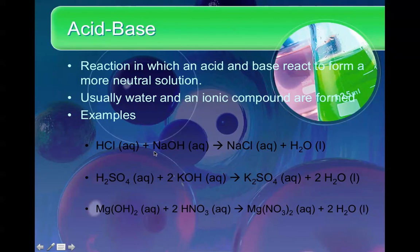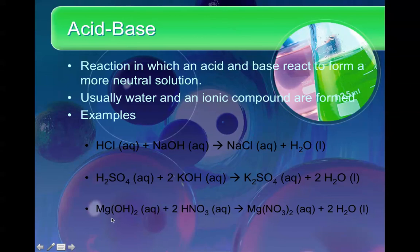We have HCl, hydrochloric acid, with sodium hydroxide — which is a base. Anything that ends in hydroxide is going to be a base. So acid plus base yields sodium chloride, the quintessential ionic compound, and water. Then sulfuric acid plus potassium hydroxide gives us the ionic compound potassium sulfate and water. And lastly, magnesium hydroxide reacting with nitric acid produces the ionic compound magnesium nitrate and, you guessed it, water.